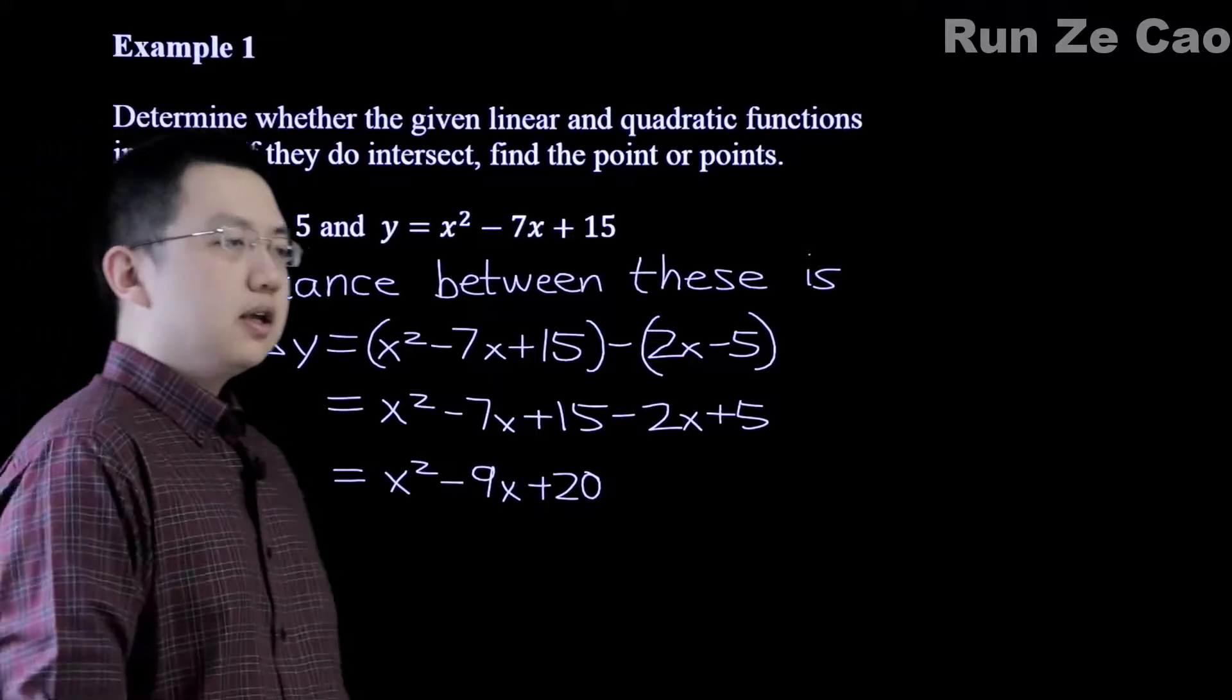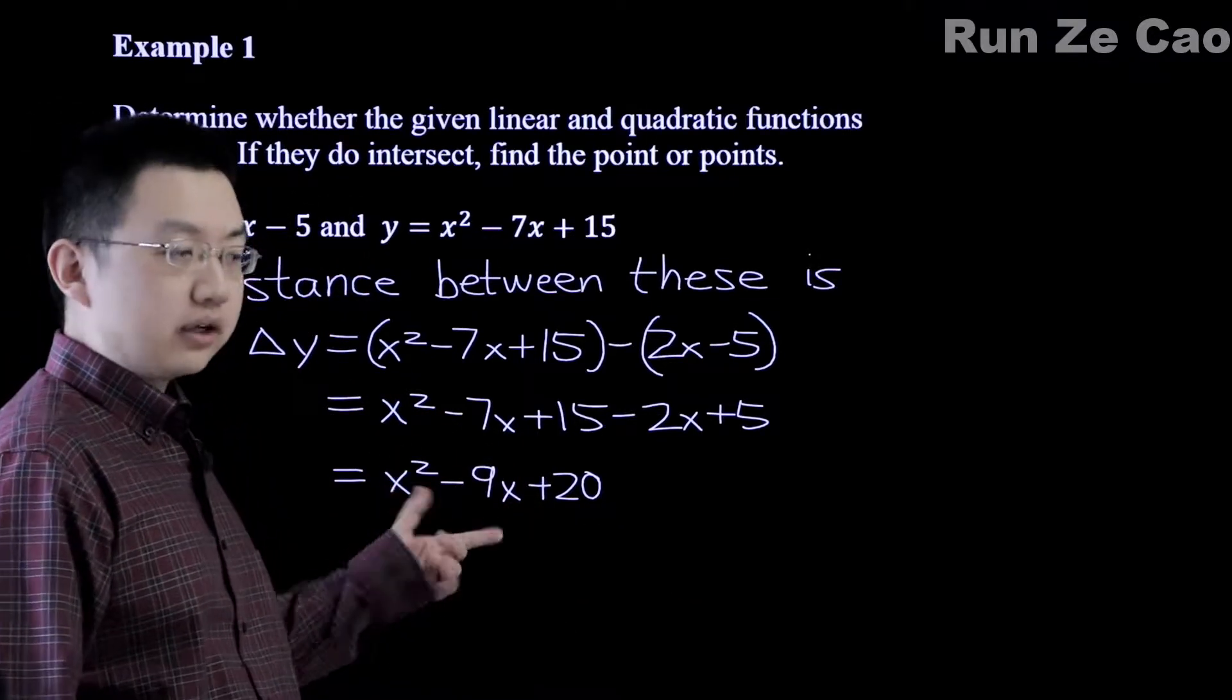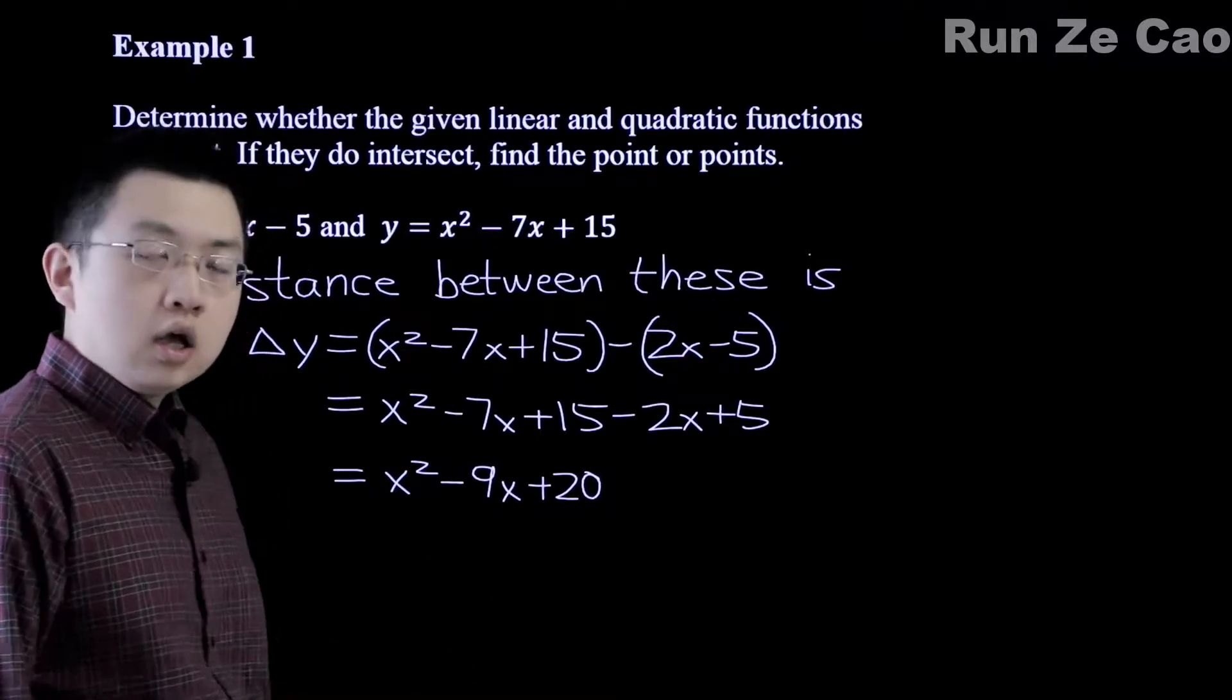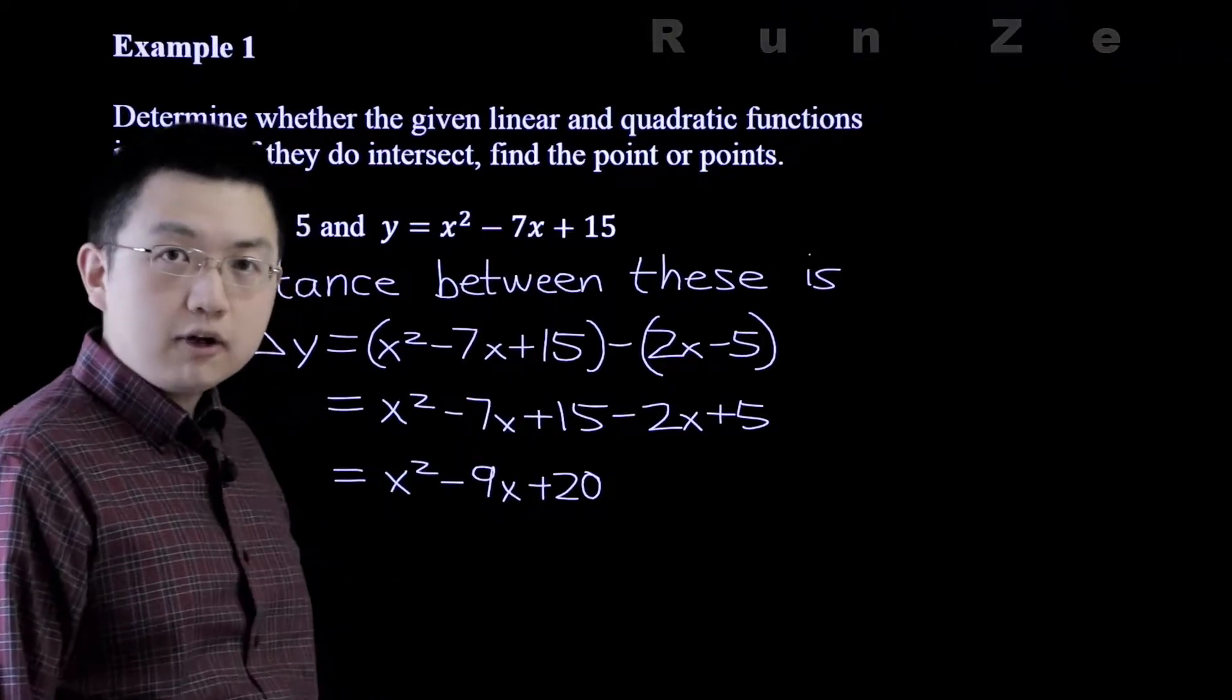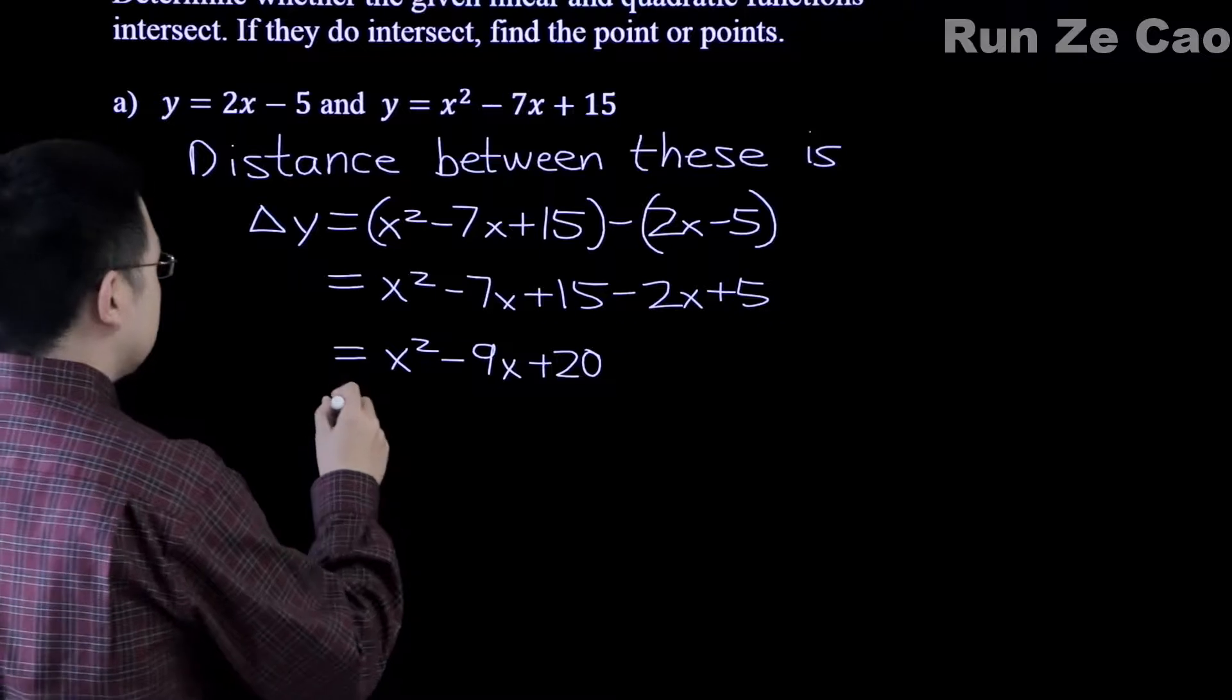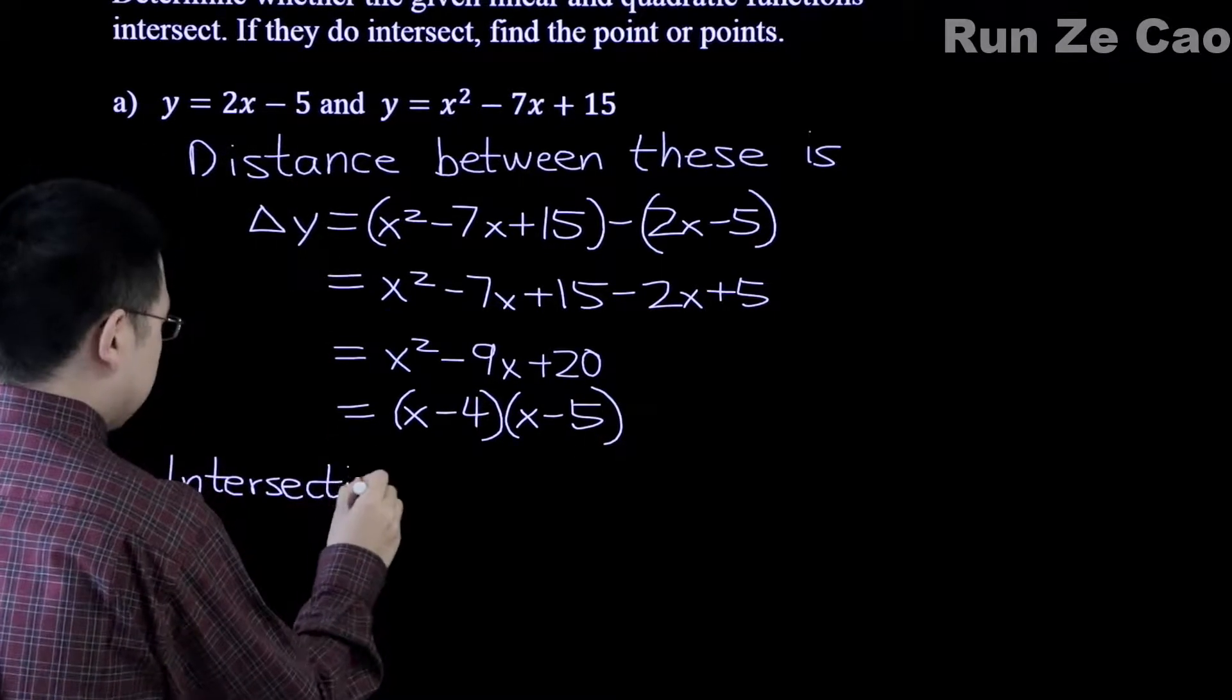Delta y equals x squared minus 7x plus 15 minus 2x plus 5, so this is x squared minus 9x plus 20. You will inevitably get a quadratic relationship which can be solved just like every single other quadratic. So you can solve it by factoring, in which this is actually a good case because it's minus 4 minus 5, they add to minus 9, they multiply to plus 20. Thus you could use a discriminant to find how many roots there are, but in this case the factoring is really obvious. X minus 4 times x minus 5.